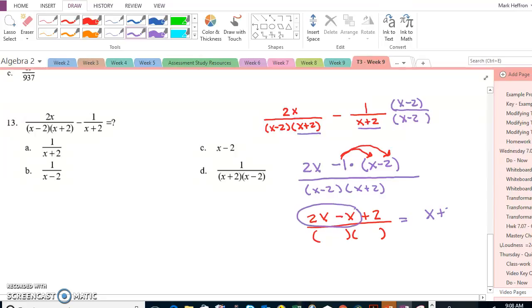I have x plus 2 over x plus 2, x minus 2, and one more simplification. The x plus 2 terms make 1, so now I really have 1 over x minus 2. The answer was B.